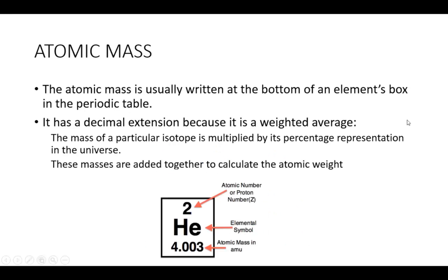Atomic mass. The atomic mass is usually written at the bottom of an element's box in the periodic table. If you notice, they have a decimal extension. It has a decimal extension because it's a weighted average. The mass of a particular isotope is multiplied by its percentage representation in the universe. These masses are added together to calculate the atomic weight.